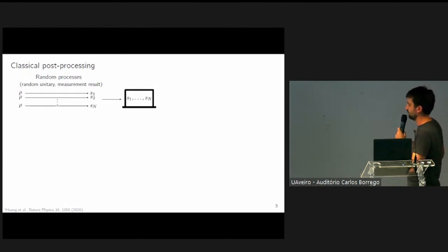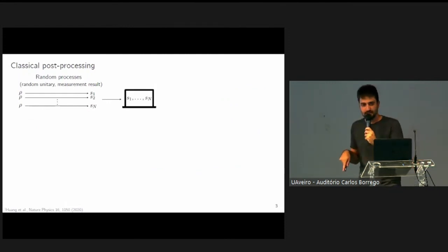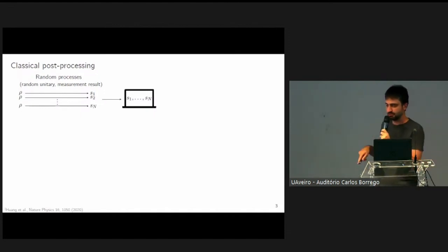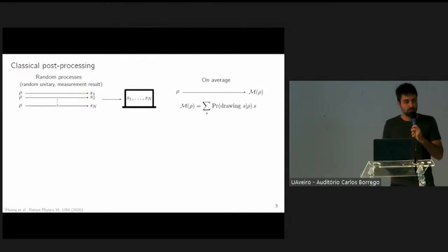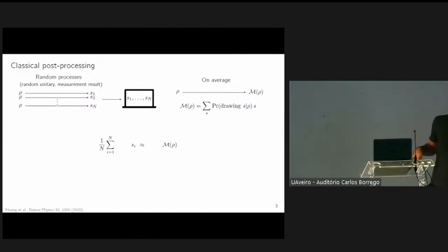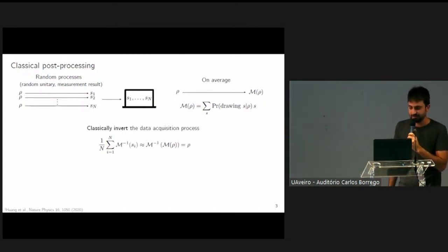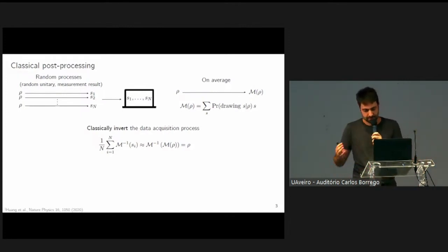But how do we extract this information? Given an observable, how do we actually compute its expectation value? The process mapping a state to a classical snapshot is a random one. There's randomness in the choice of unitary and randomness in the measurement result. But on average, we can see it as the application of a quantum channel to the state. The output of this channel, called the measurement channel, you can see it as a classical mixture of all possible output snapshots weighed by their probabilities. So you can imagine that on the classical computer you're able to actually simulate the action of this channel by simply taking the empirical average of all of these snapshots, since they are drawn from this probability distribution. But what's even more interesting is that under the right condition, this data acquisition process can be classically inverted. By that, I mean that you can literally find, as a linear map, the inverse of this M channel, which allows you to construct these variables which average exactly to the state. So this is the principle behind classical shadows.